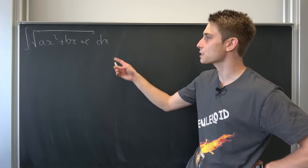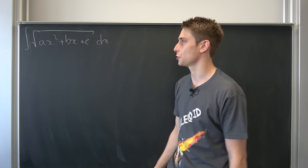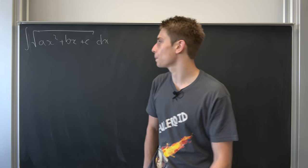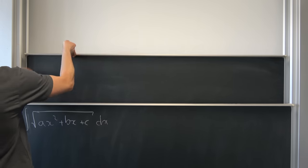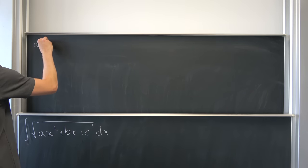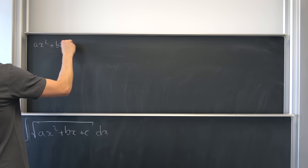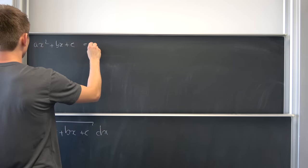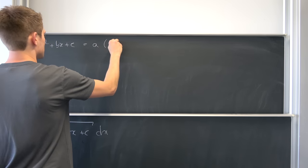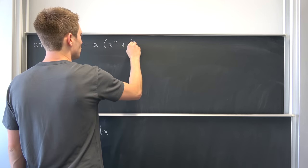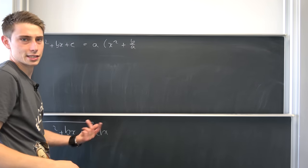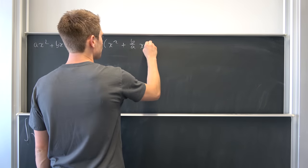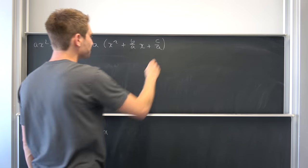So we have this a times x squared plus bx plus c, and we could figure out this 'a' at first. So we have a times x squared plus a times (b over a) — this only works if a isn't equal to zero, if you didn't notice already — times x plus c over a.